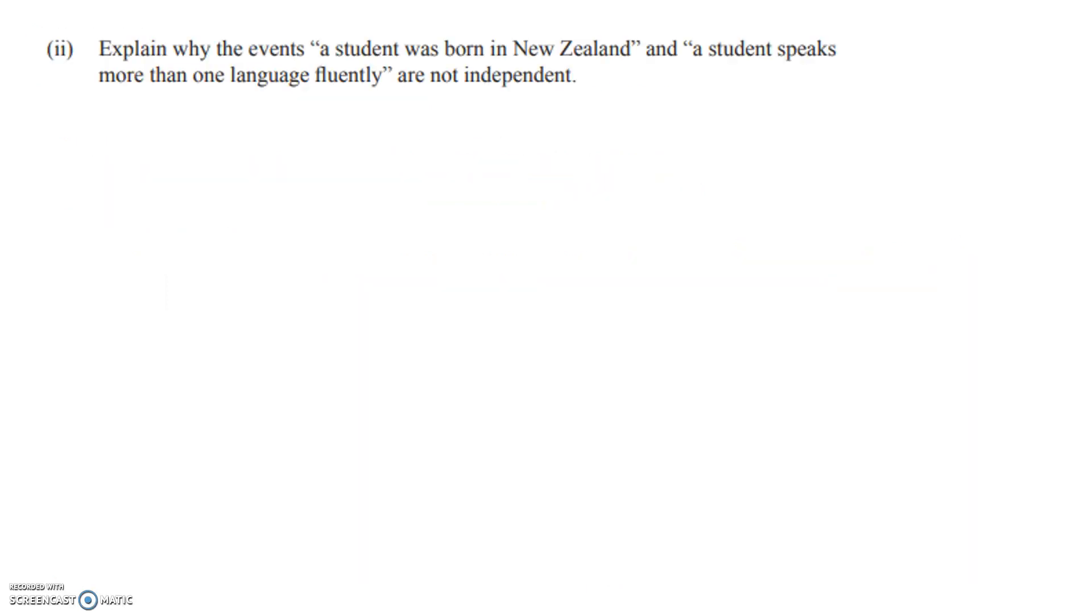Explain why the events born in New Zealand and speaks more than one language fluently are not independent. So these questions are really badly done. Today I'm going to give you three steps to get them done really well. Because this is a merit question if you communicate it clearly. Step one is to state what is your test. Step two is to apply your test. And step three is to write a conclusion.